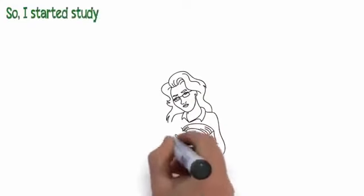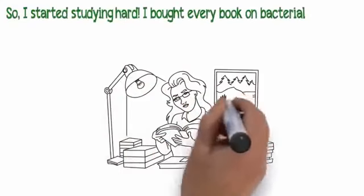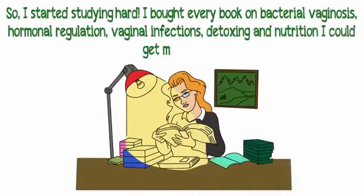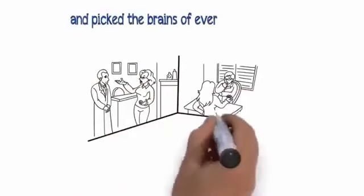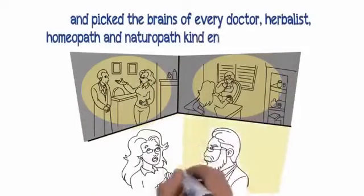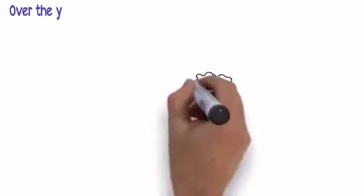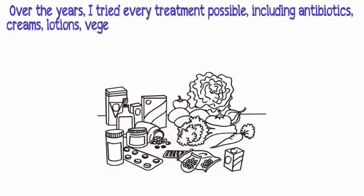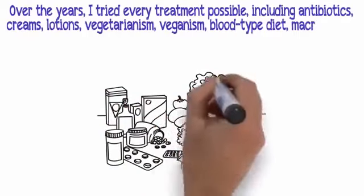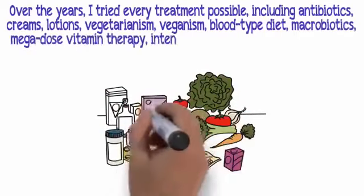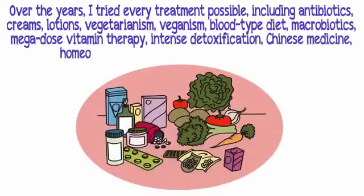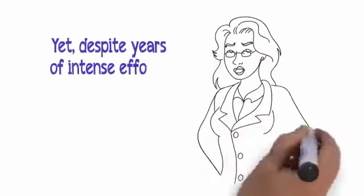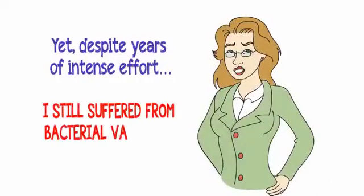So I started studying hard. I bought every book on bacterial vaginosis, hormonal regulation, vaginal infections, detoxing and nutrition I could get my hands on, and picked the brains of every doctor, herbalist, homeopath, and naturopath kind enough to lend their time. Over the years, I tried every treatment possible, including antibiotics, creams, lotions, vegetarianism, veganism, blood type diet, macrobiotics, mega-dose vitamin therapy, intense detoxification, Chinese medicine, homeopathy, and every herbal remedy I could find. Yet, despite years of intense effort, I still suffered from bacterial vaginosis.